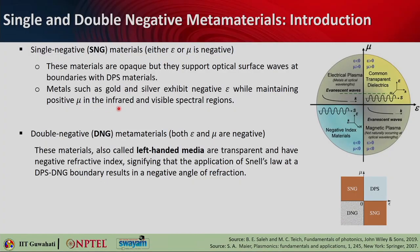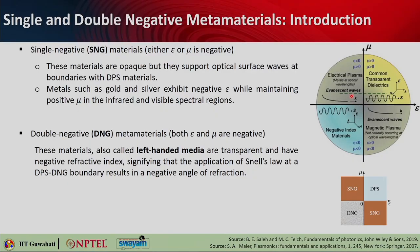When we talk about electrical plasma, we are talking about metals at optical frequency. Wave propagation is not permitted in these materials — they support evanescent waves inside them. However, on the surface at the boundary with a double positive material, you can have surface waves known as surface plasmon polaritons that propagate along the metal-dielectric interface.